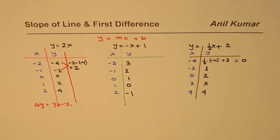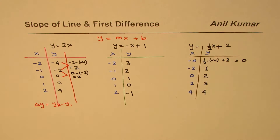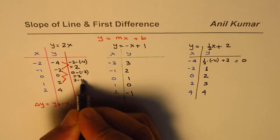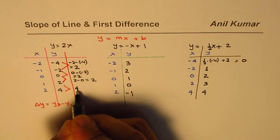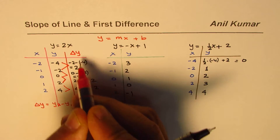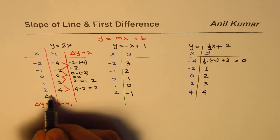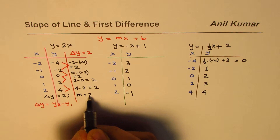For y = 2x, the first difference is: -2 minus (-4) = -2 + 4 = 2. Then 0 minus (-2) = 2, and 2 minus 0 = 2, and 4 minus 2 = 2. So the first difference Δy equals 2 for all of them. And the slope m is also equal to 2, so the first difference and slope are equal.